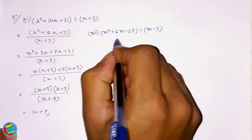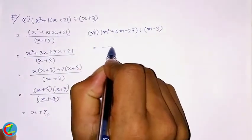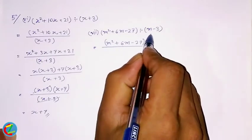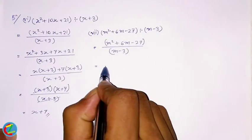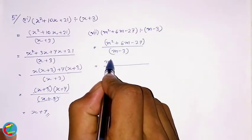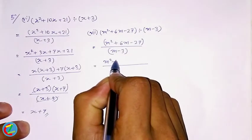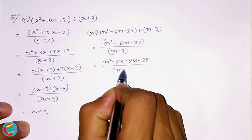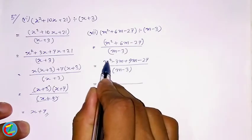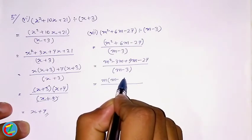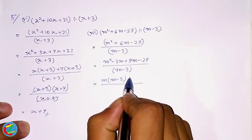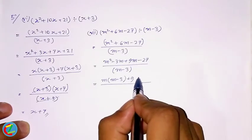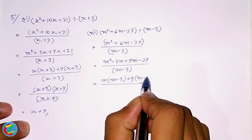Next, m² + 6m - 27 divided by m - 3. We can drop in to the second case, so we can drop the values. The final step is m - 3.